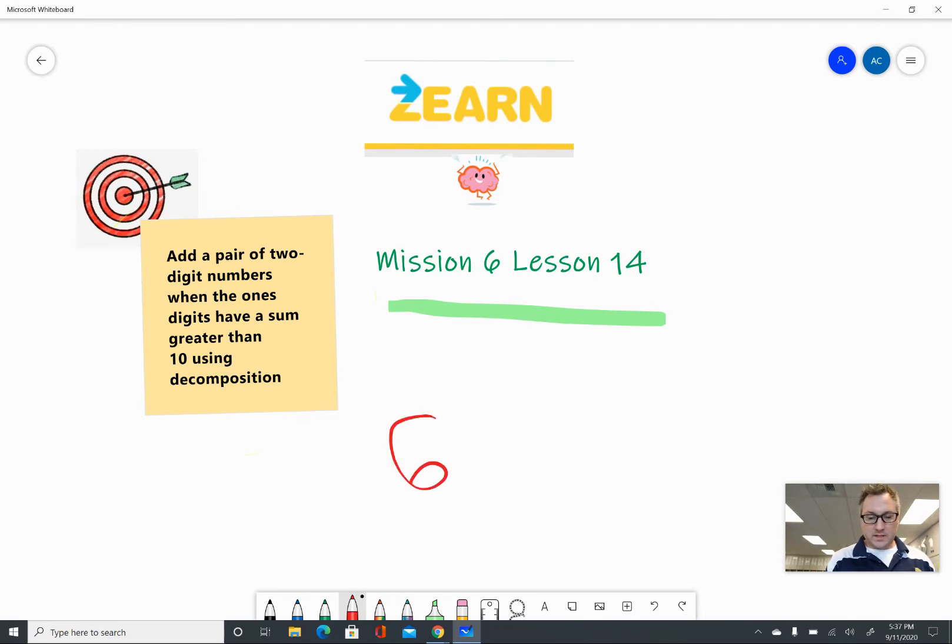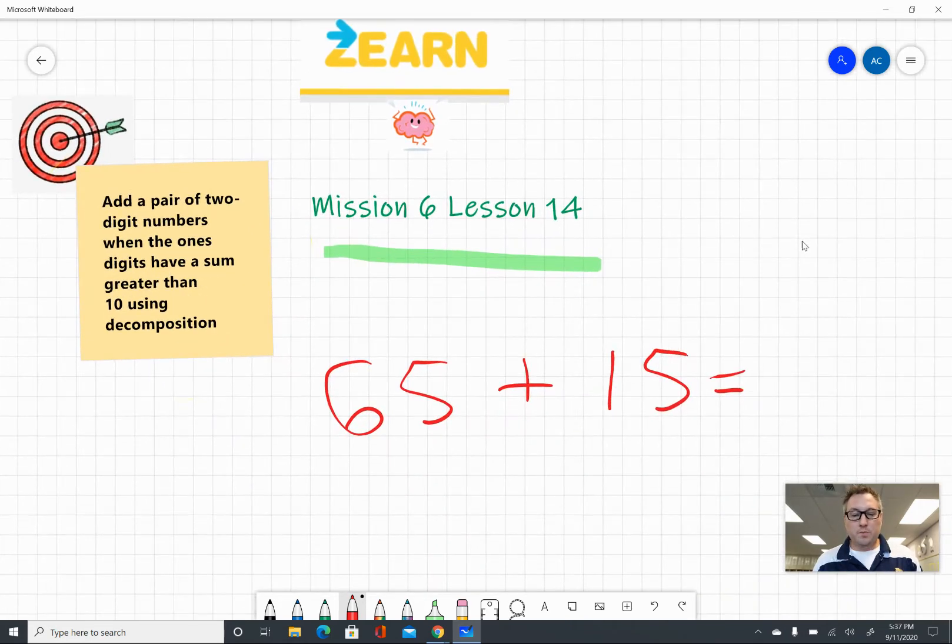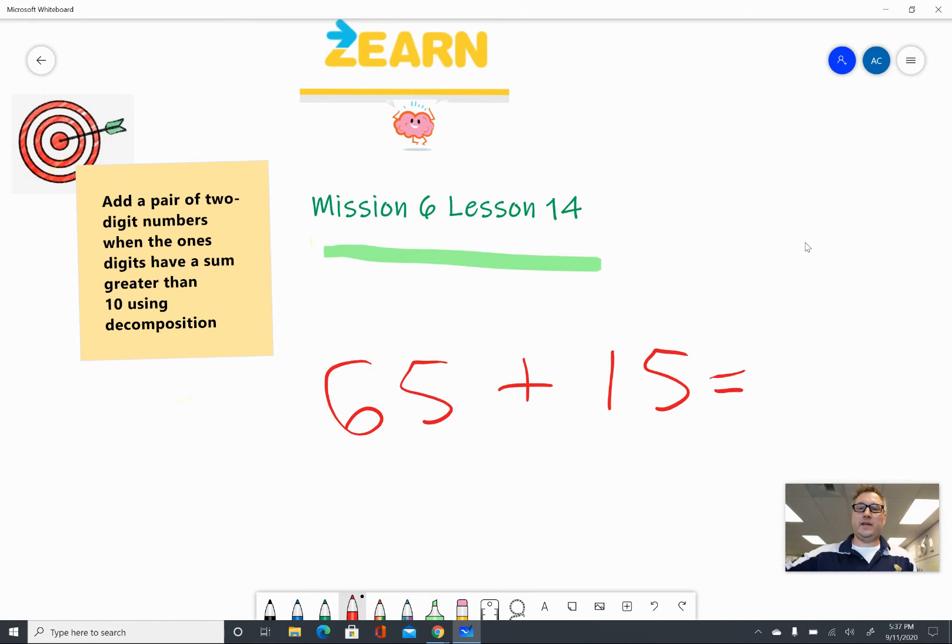Here's our first problem, 65 plus 15. What we're going to do with this is say, which part of this problem can I make the next 10? And by the next 10, because we're doing addition, we're going up, we mean the next multiple of 10. Again, a multiple means that we can count by 10s: 10, 20, 30, 40, 50, 60, 70, 80, 90, 100. So any of those, can we make the next multiple? Well, 15 and 65 both have a five in the ones place, but I think because 65 is bigger, I'm going to start with that one. And by start with that, what I really mean is I'm going to take apart 15.